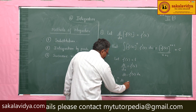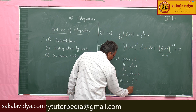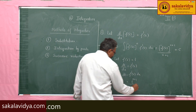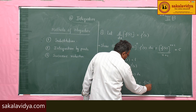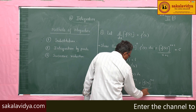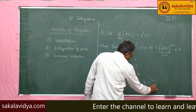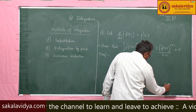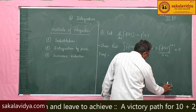This gives t^(n+1) divided by (n+1). Since t is nothing but f(x), we get f(x)^(n+1) divided by (n+1) plus the constant of integration, where n does not equal minus one.